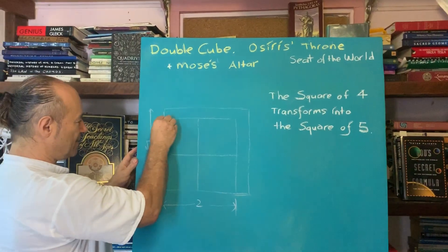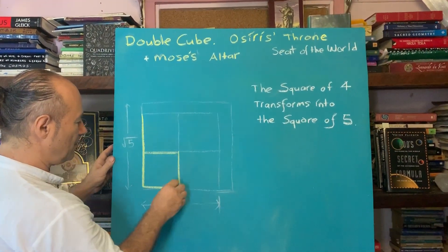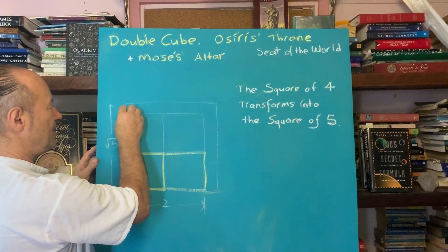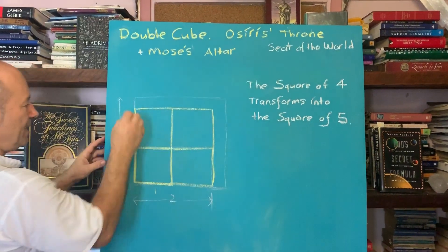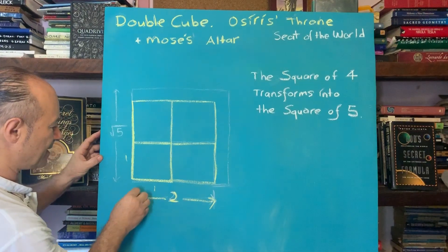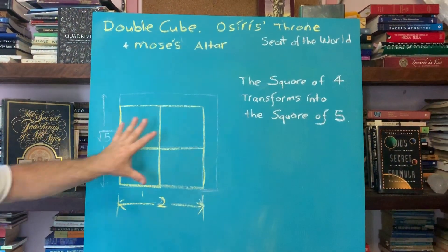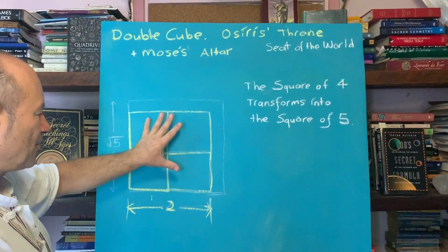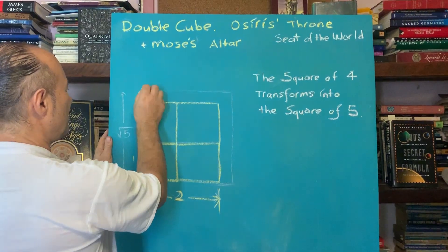Let's construct a double square. If this unit is one — one by one — we know that this is the square of two, and we know that the square of two is four units. So this square, the throne that Osiris sits on, which is the seat of the world, sits on two by two, or four square units.